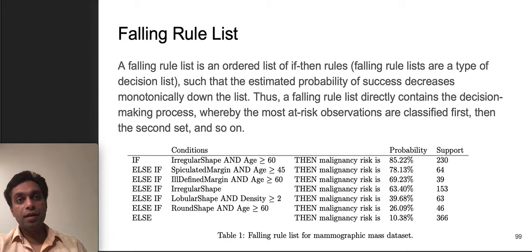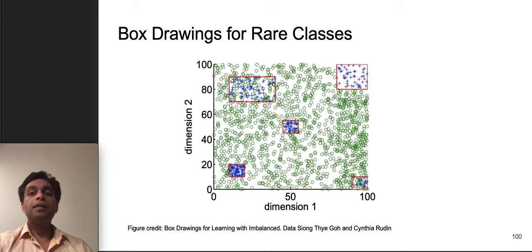A very similar notion is called a falling rule list. A falling rule list is an ordered list of if-then rules but with the added constraint that estimated probability of success decreases monotonically down the list. Thus, a falling rule list directly contains the decision making process and the more at risk observations are classified first. This is something which is again even more practical. In the slide you can see an example of a decision list which is basically if looking at mammographic mass data, if it's an irregular shape and age is greater than 60 then the risk is... and then it tells you the probability of risk and also the support value. As you can observe that the probability of risk is going down monotonically down the list.